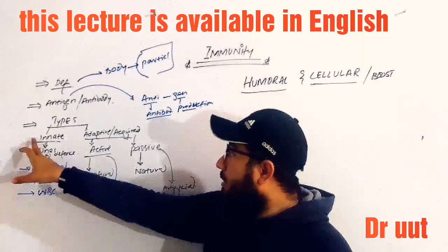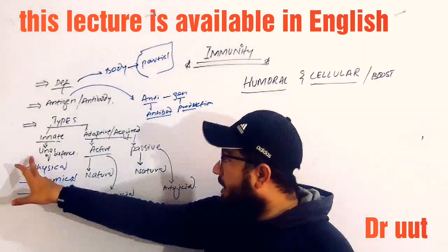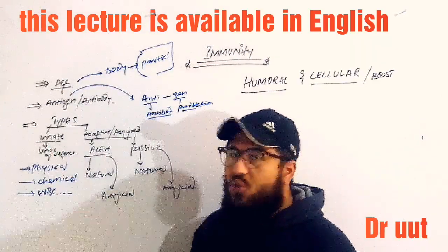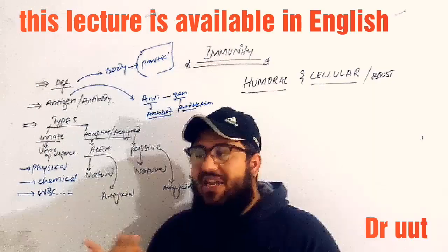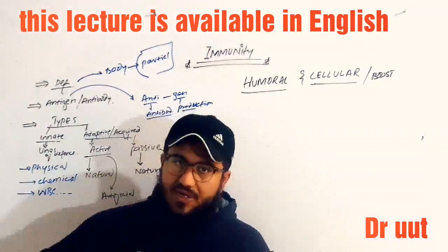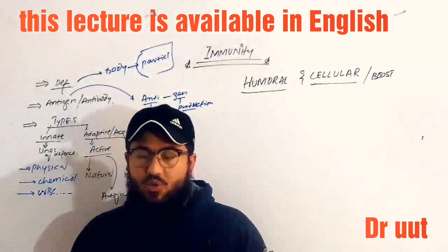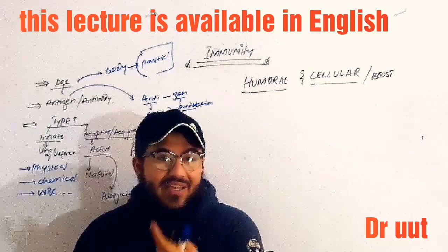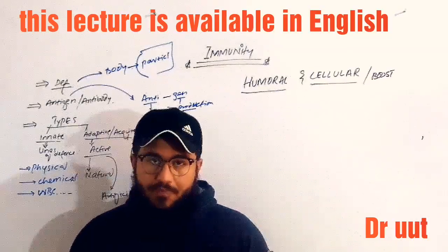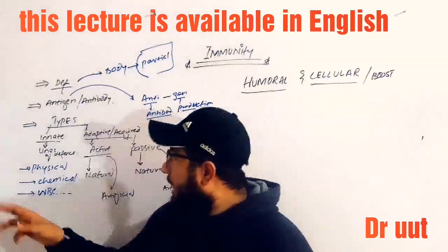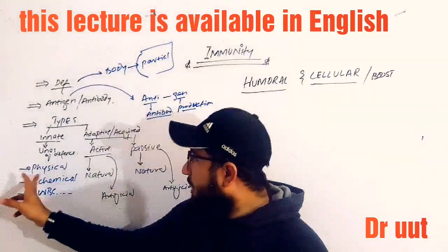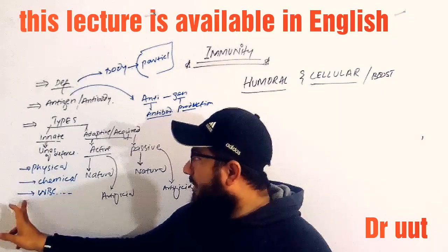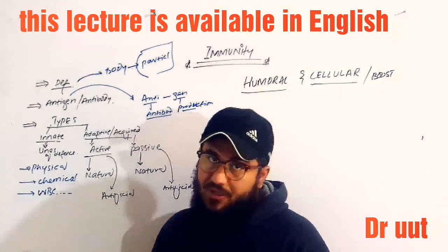In different texts, innate immunity is described through lines of defense: first line, second line, and third line defense mechanisms through which our body fights against pathogens. Innate immunity is physical, chemical, or WBC-based immunity.